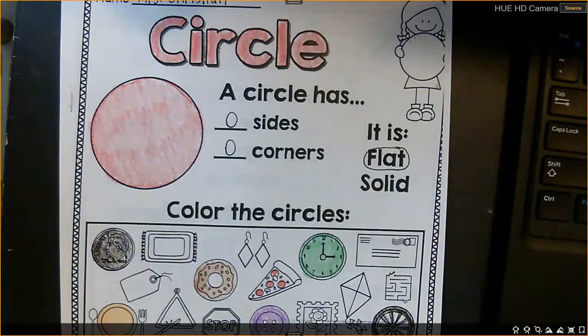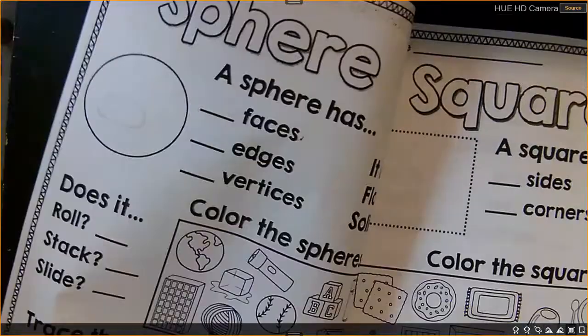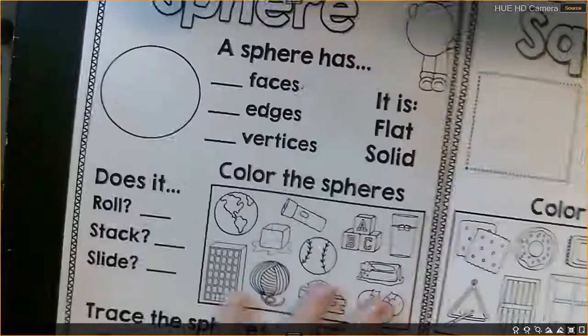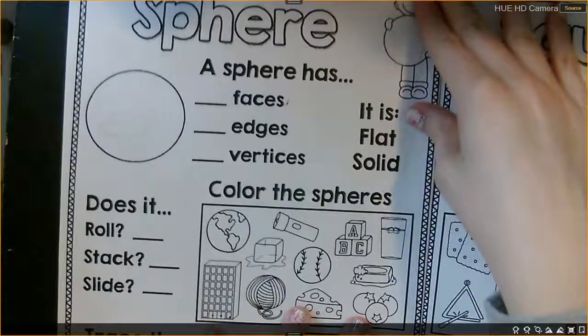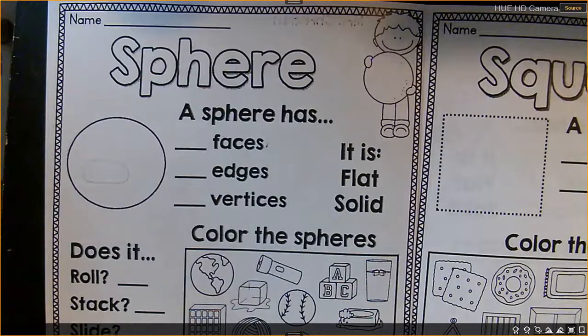Now we're going to open up. We're going to talk about a 3D shape that is like a circle, but it's 3D. Okay, this is the 3D version of a circle. It's a sphere.